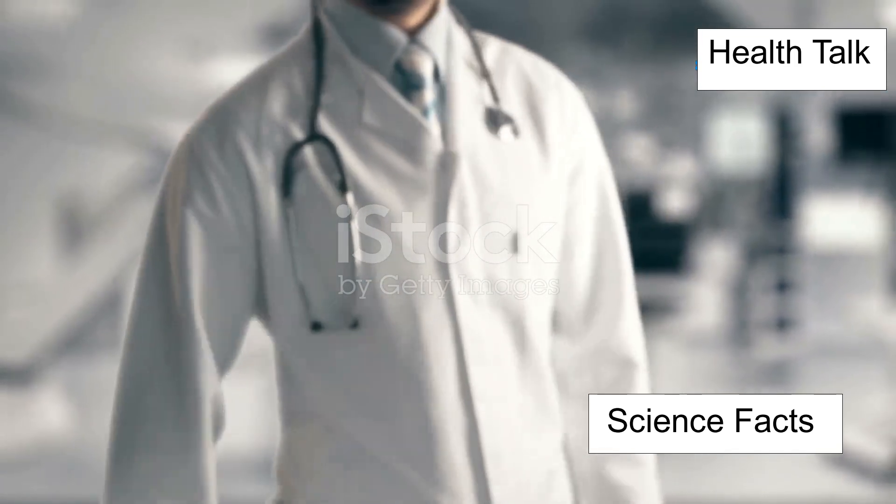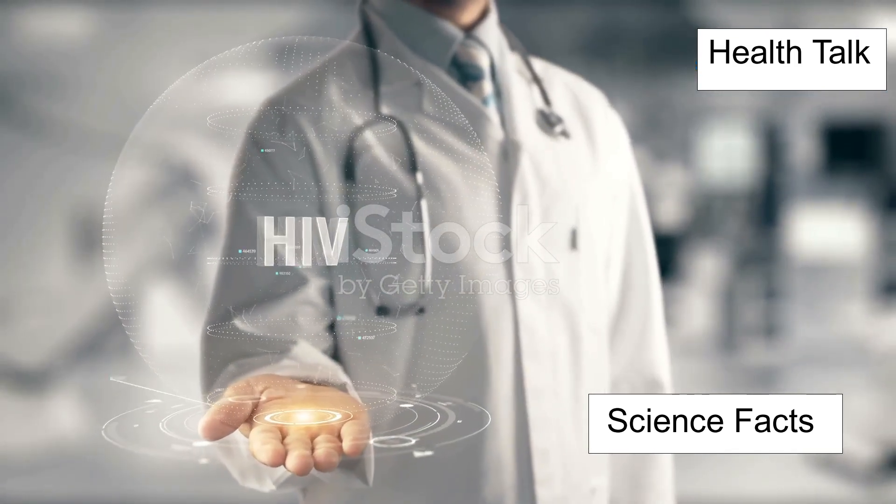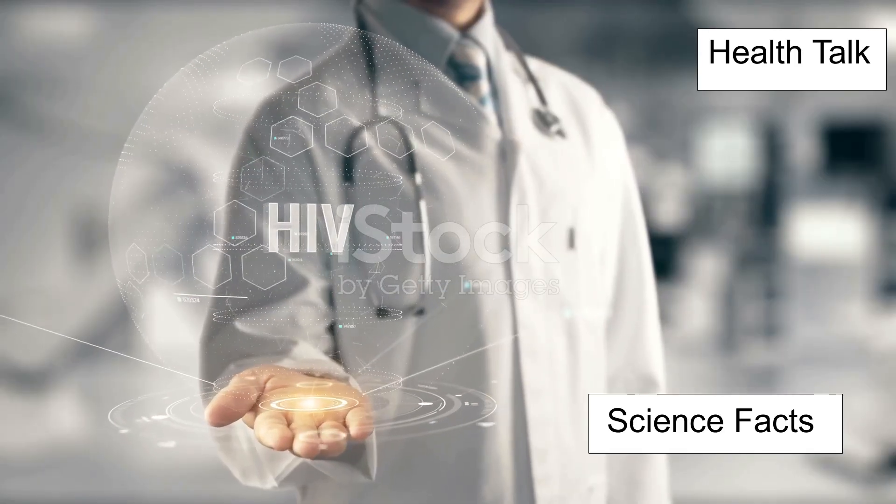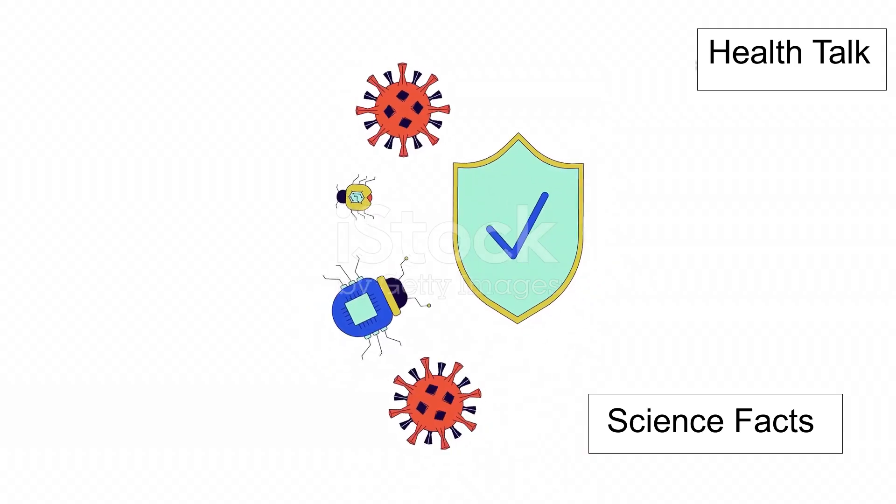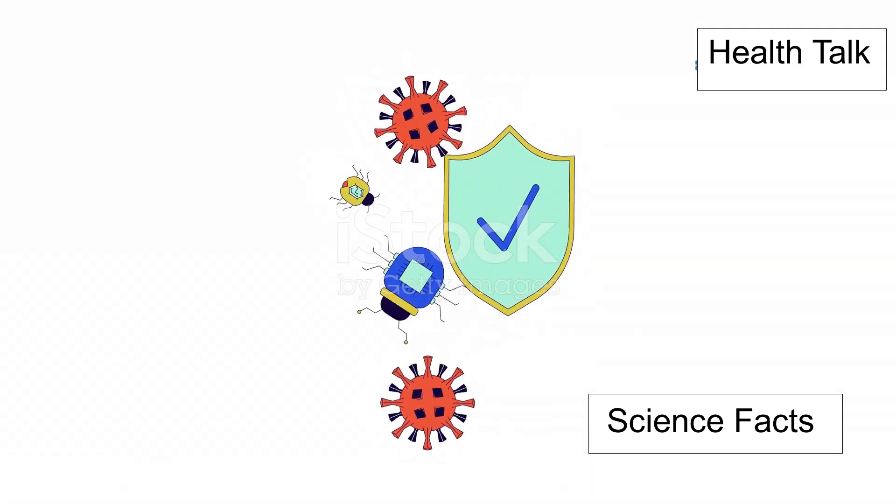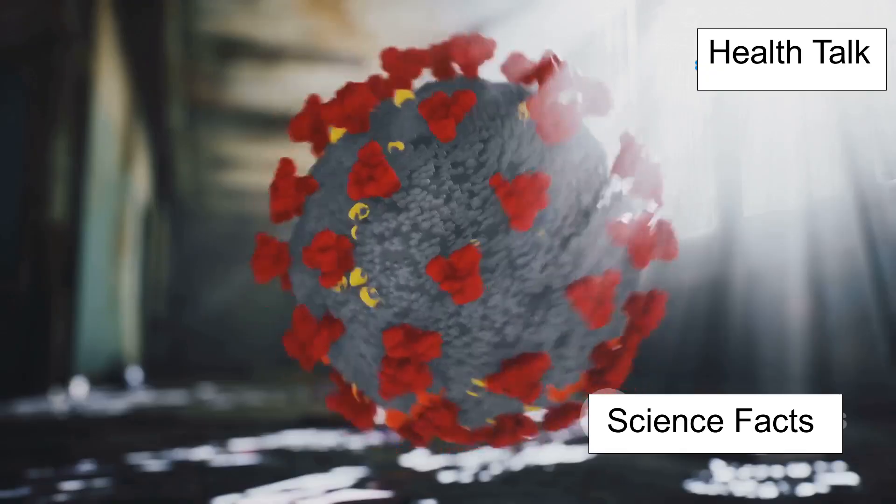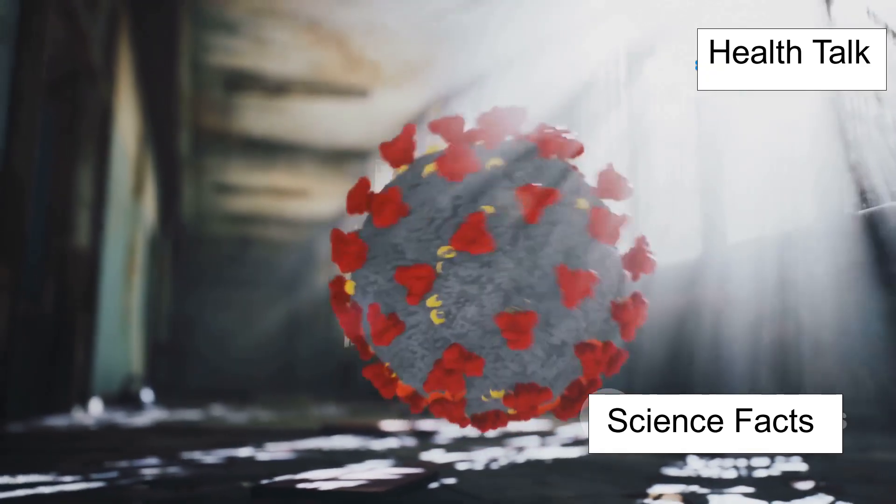But here's the good news. Antiretroviral therapy, or ART, can suppress HIV so well that people live long, healthy, completely normal lives. And when HIV becomes undetectable with treatment, it's untransmittable. That means you can't spread it to others. U equals U.